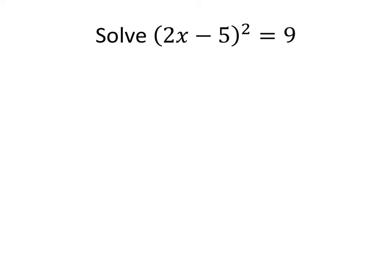But because this equation is set up in a specific way — something squared equaling 9 — a much quicker way to solve this problem is to take the square root of both sides. When we do that, we have to be careful to get a plus or minus term on the right-hand side. So we get 2x minus 5 on the left, and that equals plus or minus the square root of 9, which is 3.